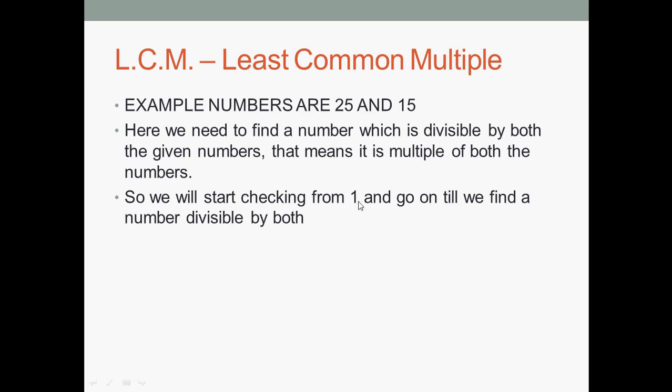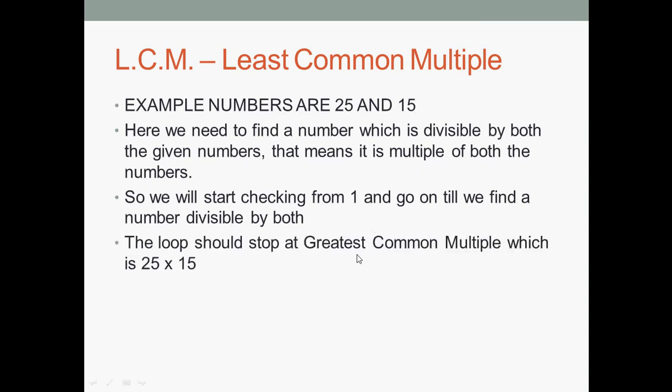So we need to start from 1, go further, and check each number that is divisible by both A and B. We will loop from 1 upward, and we need a limit on the loop. If we go further from one and repeat the loop — when do we stop repeating?